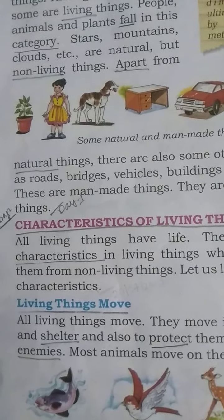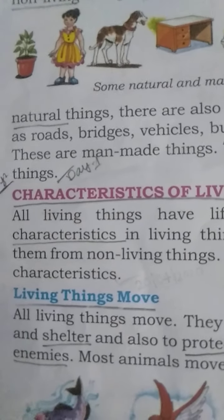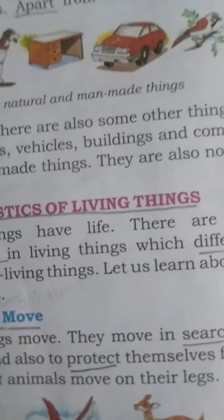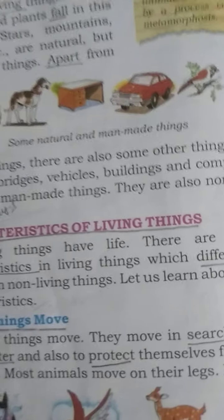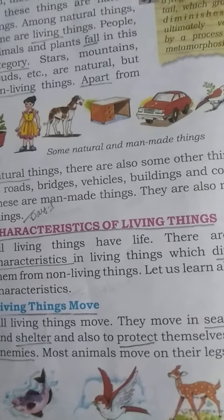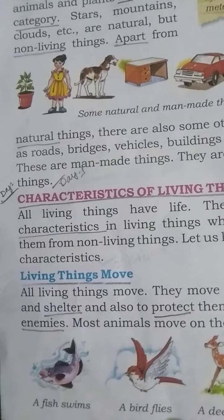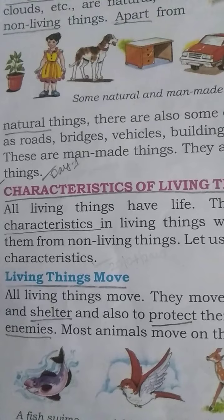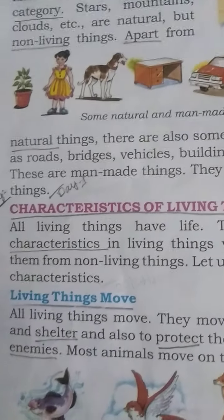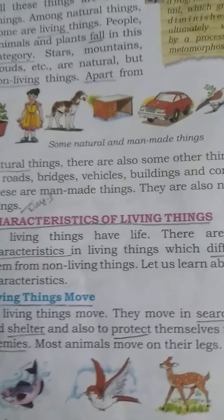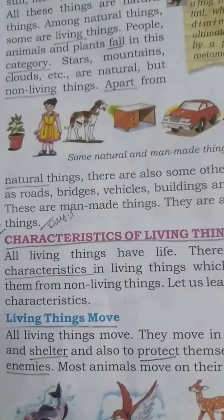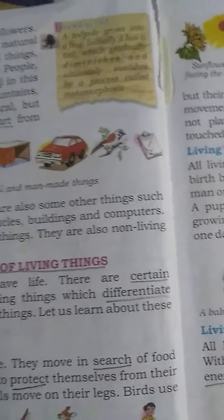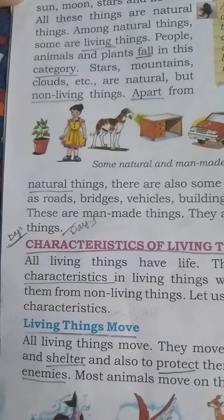Students, watch the reading and listen carefully. Characteristics of living things — characteristics of living things means the features of living things, those which have life. All living things have life. There are certain characteristics in living things. Certain means নির্দিষ্ট (nirdishto — specific). Characteristics means চরিত্র/গুণাবলী (characteristics/qualities) of living things.